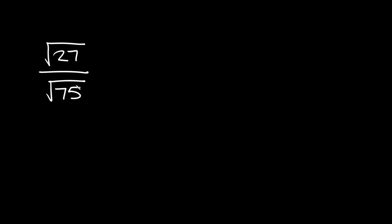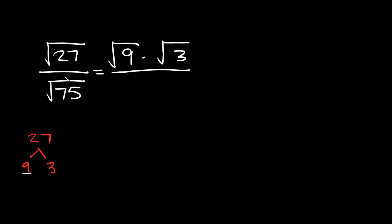Now here we have the square root of 27 over the square root of 75. Neither one of these are perfect squares, so we're going to have to break them down into factors. For 27, we can break it down into 9 times 3 — and 9 is a perfect square. So the square root of 27 breaks down into the square root of 9 times the square root of 3. For 75, we can break it down into 25 times 3, and 25 is a perfect square, so the square root of 75 becomes the square root of 25 times the square root of 3.